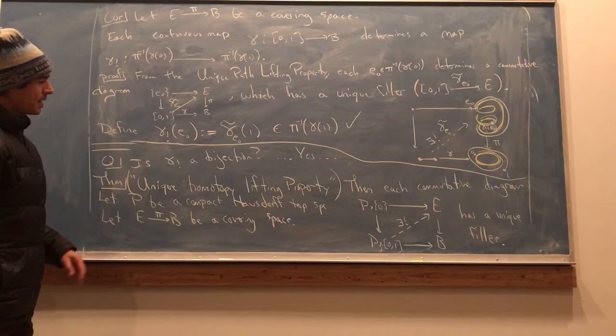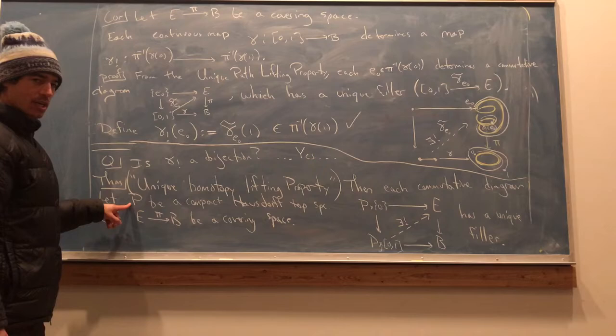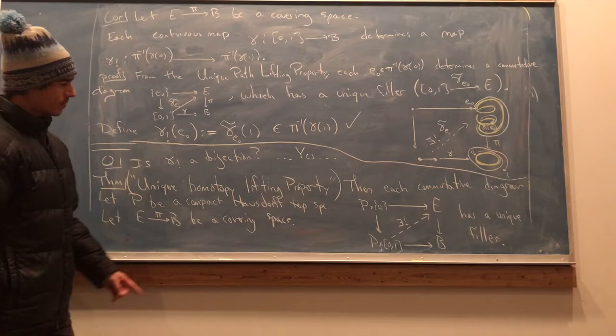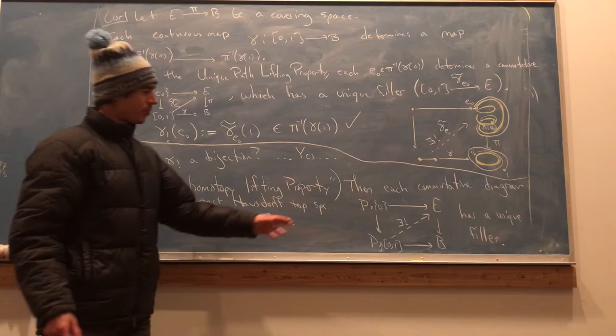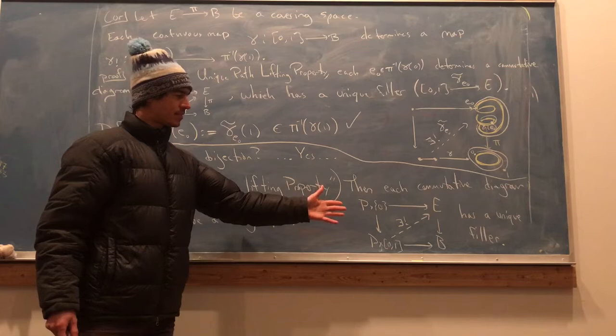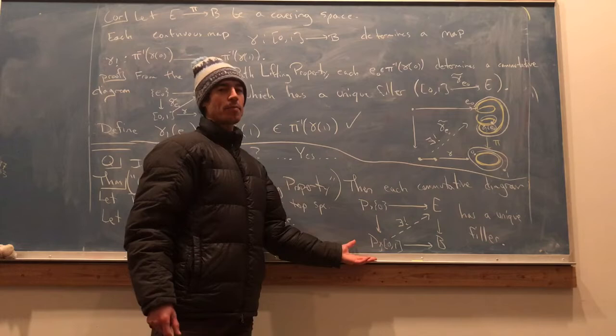Here's what it says. Let P be a compact Hausdorff topological space. P stands for parameter. Let E to B be a covering space. Then each commutative diagram, each solid diagram, has a unique filler. I hope that looks very familiar. For instance, if capital P is just a point, which is certainly a compact Hausdorff space, then this is just the unique path lifting property right back again.